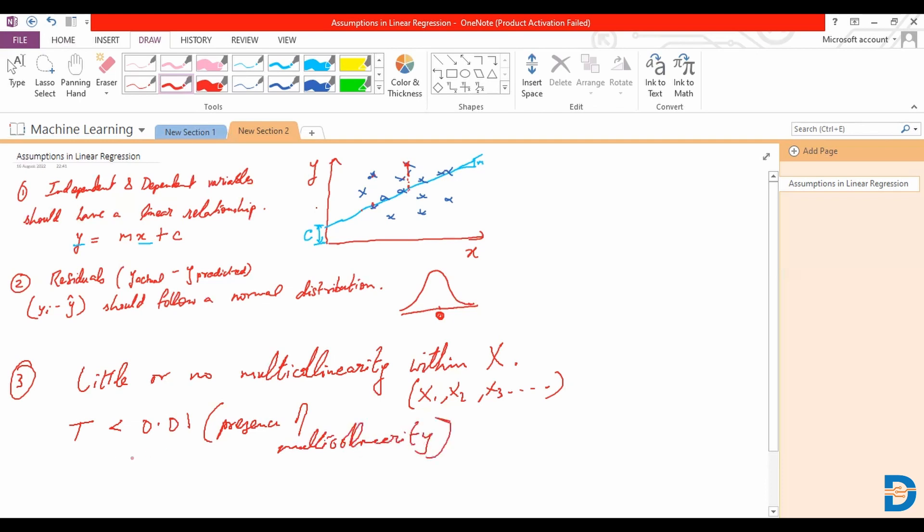And similarly if we were to give an equivalent of the tolerance it would be the variance inflation factor VIF. And we say T should not be less than 0.01. Okay similarly VIF should not be greater than 10. Okay that once again is denoting that there is multicollinearity present.